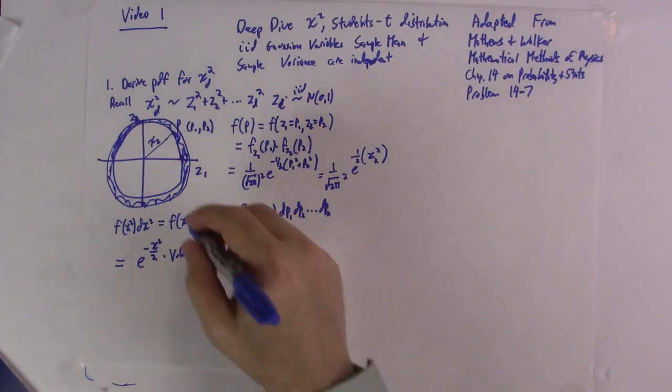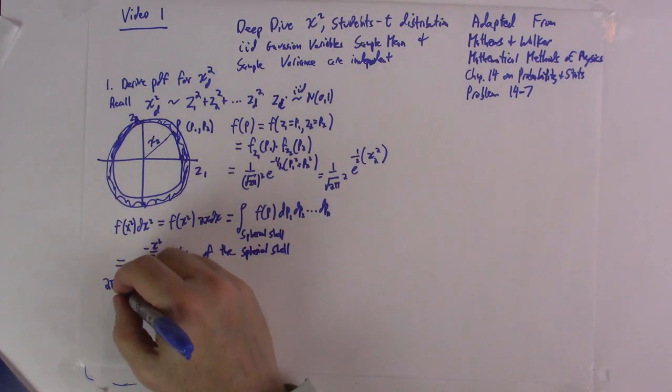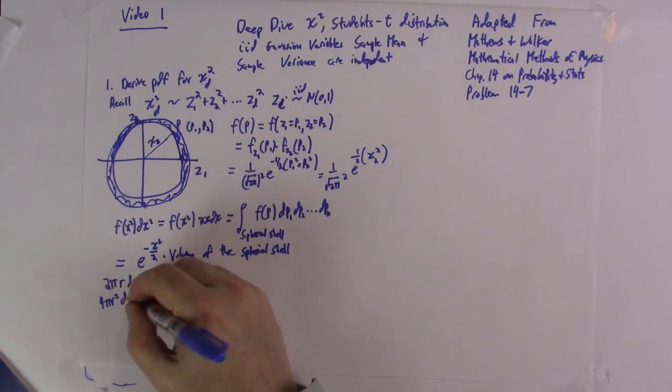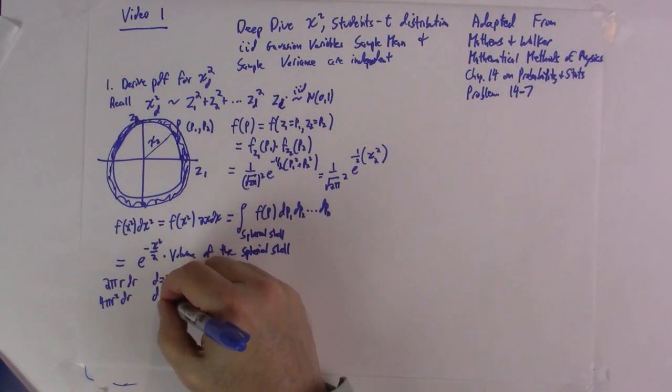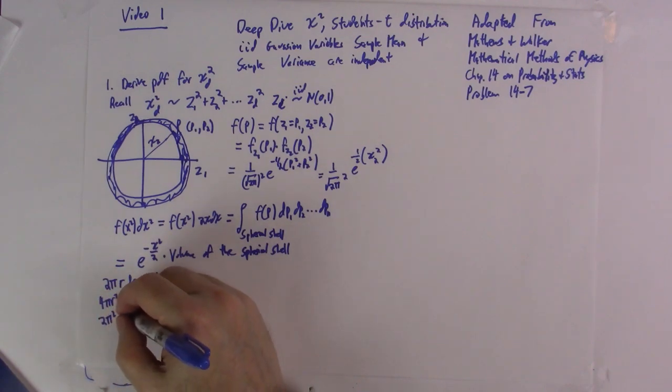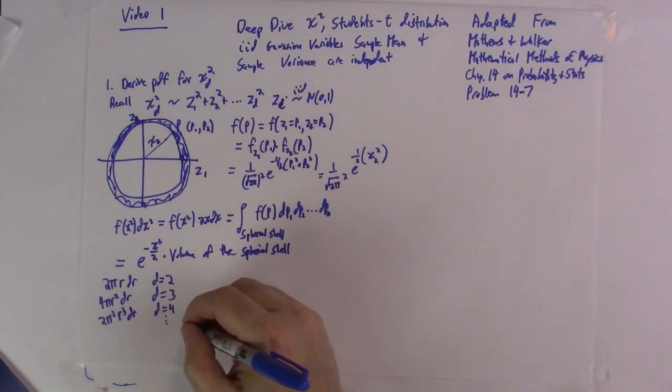Now, in two dimensions this would just be equal to 2 pi r dr, for d equal to 2. Three dimensions, 4 pi r squared dr, d equal to 3. And if memory serves me correctly, 2 pi r squared r cubed dr for d equal to 4, and so on.